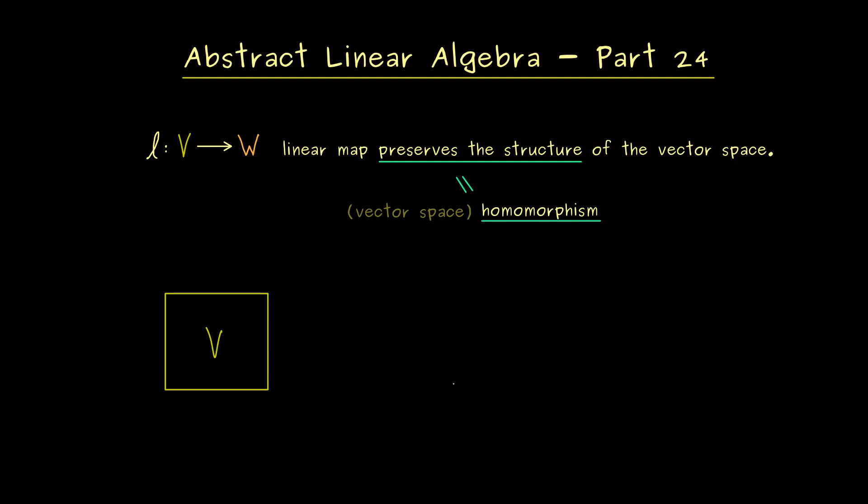And this is not so complicated, because we already know what the composition of linear maps is. In particular, this means that we could compose L with another linear map K.